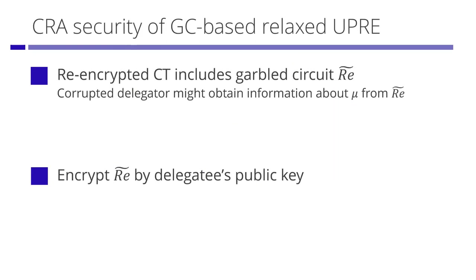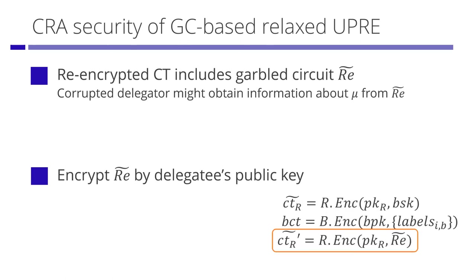The scheme in the previous slide does not satisfy security against corrupted delegator re-encryption attacks, because the garbled circuit might leak information about the message if the adversary has the delegator's decryption key. We can solve this problem by encrypting the garbled circuit by the delegator's public key. However, this incurs size blow-up, so the number of re-encryptions is restricted — we can re-encrypt only a constant number of times.